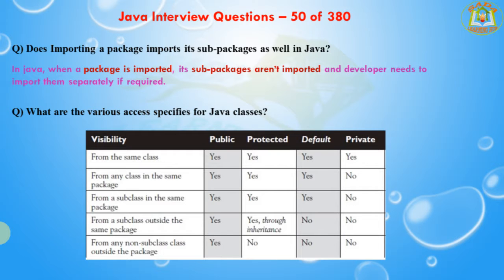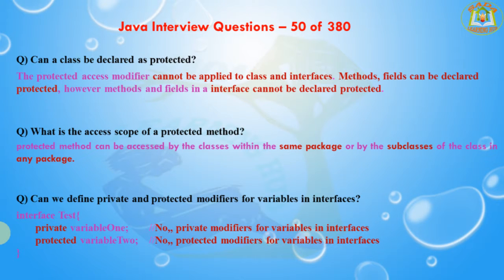The next question is: can a class be declared as protected? The protected access modifier cannot be applied to a class or interfaces. Methods and fields can be declared as protected; however, methods and fields in an interface cannot be declared as protected. The protected access specifier can only be applied to class-level methods and fields — it is not possible in interface methods and fields.